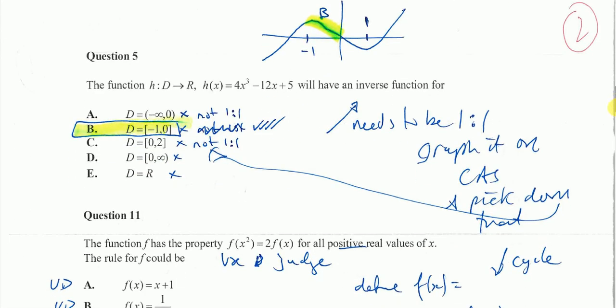Looking at question number 5, I've drawn this on my calculator. I can see that I have a turning point at -1, and a turning point at 1. And this function will have an inverse function, only if it is 1 to 1. So I've got to pick the domain that gives me a 1 to 1 function.